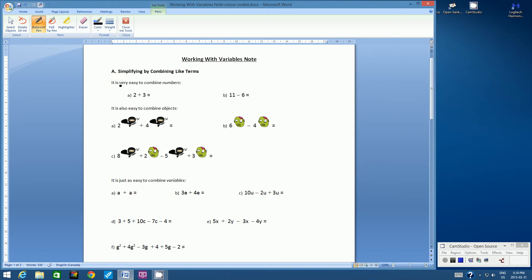So let's start here. It is very easy to combine numbers. You've been doing it since grade 1. Example A, 2 plus 3. We combine the 2 plus the 3, giving us, of course, 5.